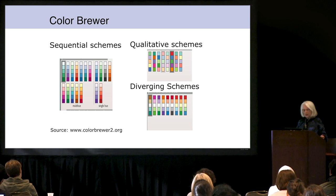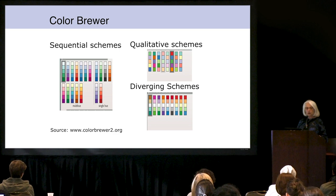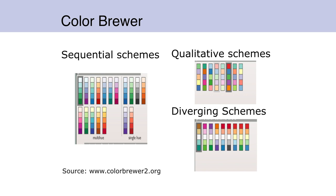This was done by Cindy Brewer, and she discusses three types of schemes for choosing colors. In a sequential scheme, you have one hue with varying saturation and lightness. And that's very good for quantitative data — you go from lighter to darker.